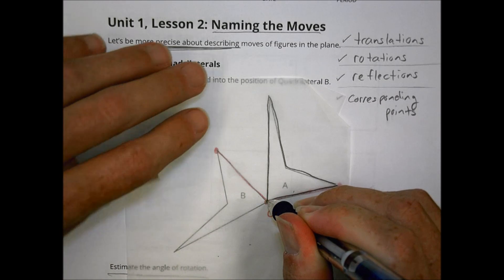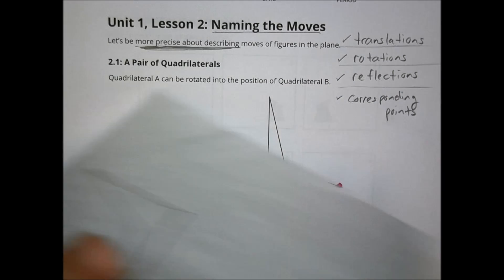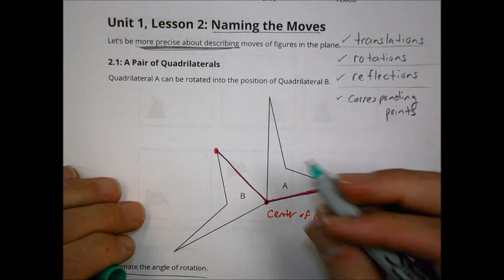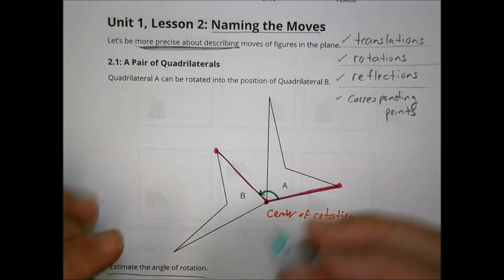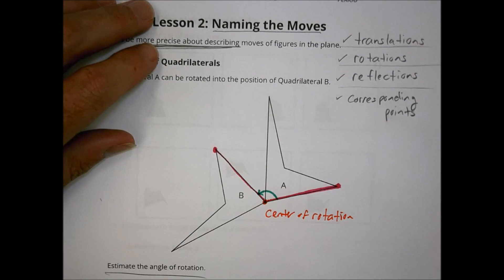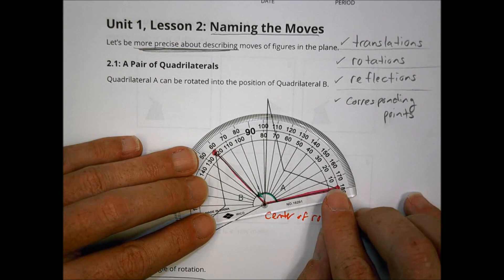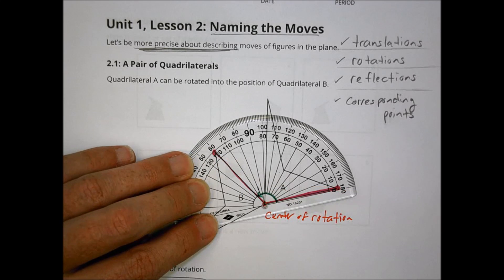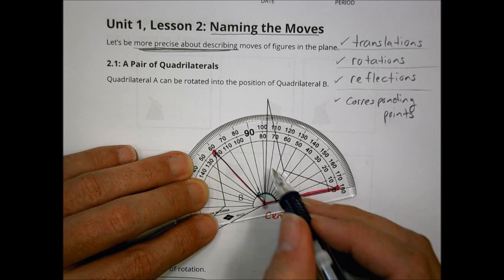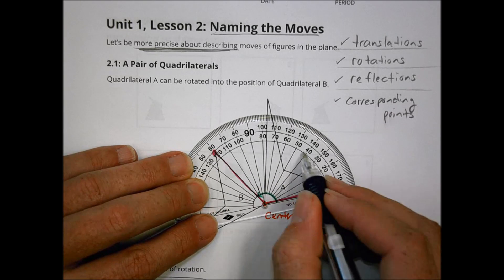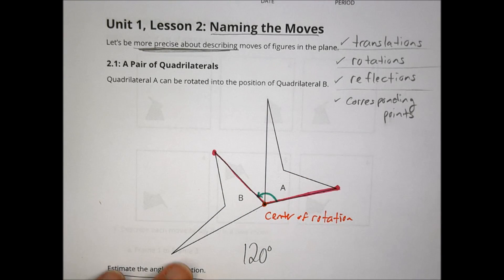What's being asked is: how far am I rotating from here all the way over to here? Basically, what is the measurement of that angle? You took a protractor, lined up your bottom line, put your center point there, and you notice you're about 120 degrees to go from here all the way to there. So you start at zero and move around to 120 degrees — that's how much that angle rotated.